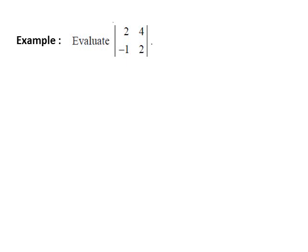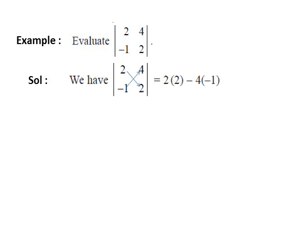Let us discuss some examples. First: evaluate the determinant of the matrix of order 2×2 with elements 2, 4, minus 1, and 2. The determinant equals the product of diagonal elements minus the product of non-diagonal elements. The diagonal elements are 2 and 2, and the non-diagonal elements are 4 and minus 1. So, the determinant equals 2×2 minus 4×(minus 1), which simplifies to 4 plus 4, equals 8.